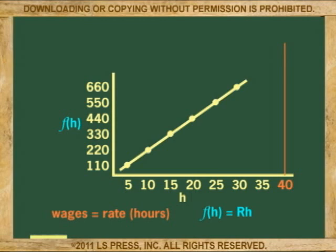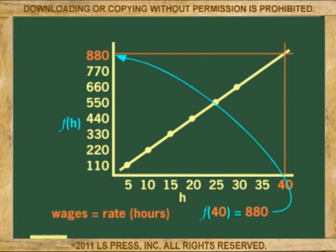Because the hourly rate is a constant at 22 dollars per hour, the equation is the function of H equals 22 times H. Therefore, in function notation, it will show that we want to find the function at 40 equals 22 times 40. And the answer is 880 dollars for 40 hours.